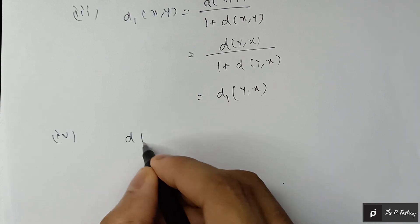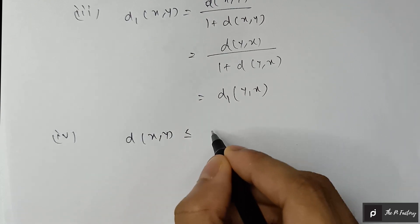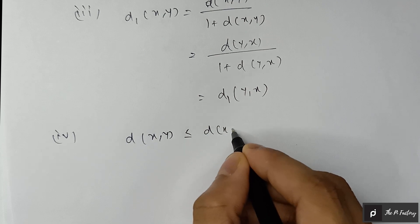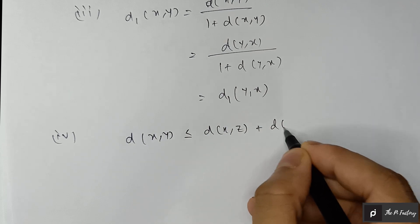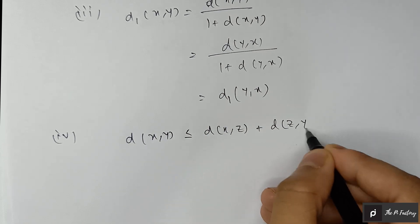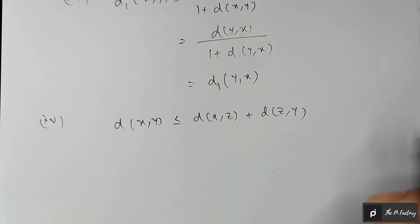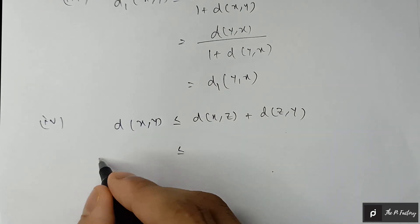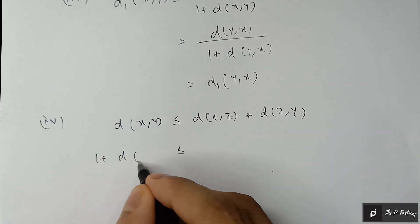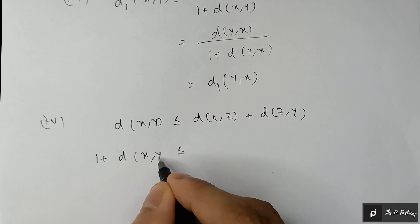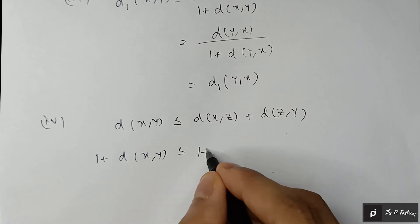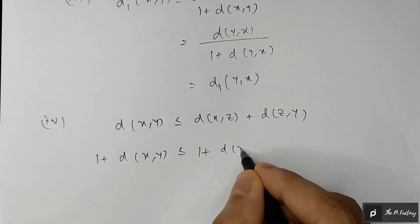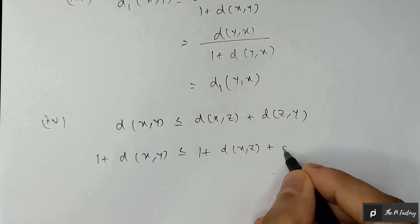For the triangular inequality: since d is a metric space, we know d(x, y) ≤ d(x, z) + d(z, y). Adding one to both sides will not affect the inequality.